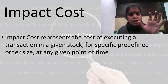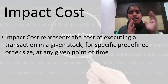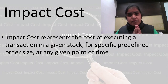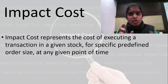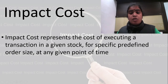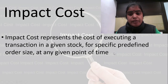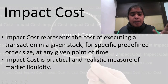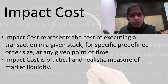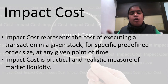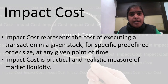If stock A has a difference between best buy and best sell of, say, 5 rupees — for example 100 and 105 — if this difference is more, the cost of execution will be higher, meaning the stock is not very liquid. Impact cost represents the cost of executing a transaction in a given stock for a specific predefined order size at any given point of time. It is a practical and realistic measure of market liquidity. If the gap between best buy and best sell is large, there is less liquidity, and we can compare stocks to determine which are more liquid.